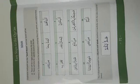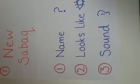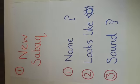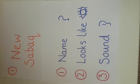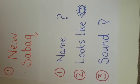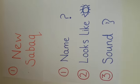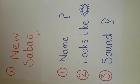Now to explain this new sabak — you know that every time we introduce a new sabak or a new concept, we always ask three things. If you look at this sheet, we ask: what is the name of the new concept or rule, what does the new concept look like, and what is the sound of the new concept?